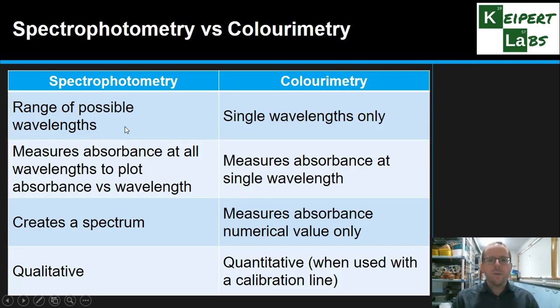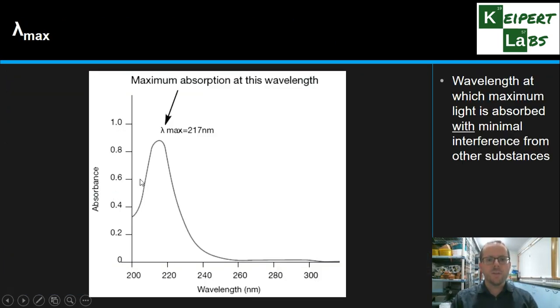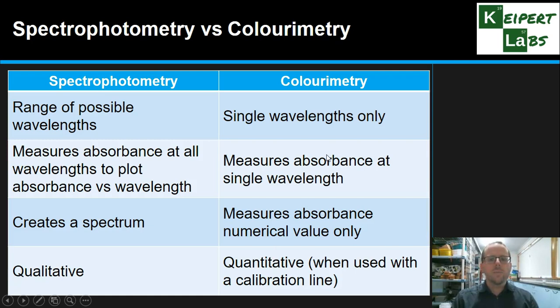So now what we're just going to have a quick look at comparing spectrophotometry versus colorimetry. Spectrophotometry, we're actually measuring a range of possible wavelengths, whereas colorimetry, we're focusing on a specific wavelength at a time. For spectrophotometry, we're measuring the absorbance at all of these wavelengths and actually then creating that spectrum. Whereas we're getting absorbance at a single wavelength only for colorimetry. We get a spectrum with spectrophotometry, but we only get a numerical value of absorbance with colorimetry. However, what colorimetry can do is give us quantitative information when we combine it with the construction of a calibration line, whereas the spectrum is qualitative. But what it does allow us to do is it allows us to target a specific wavelength, but then we can actually focus that maybe we want to get quantitative data by now pinpointing the wavelength that we want.